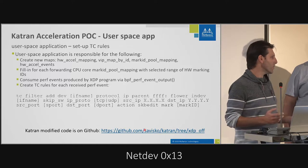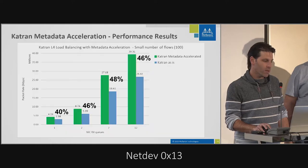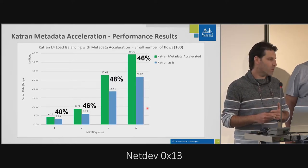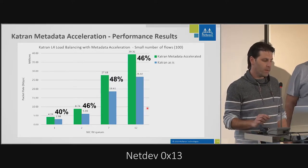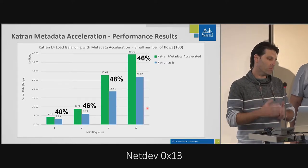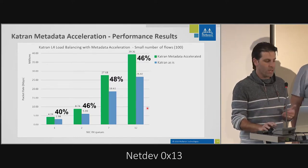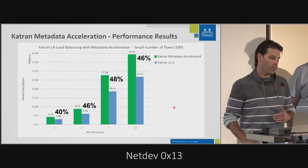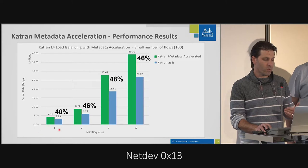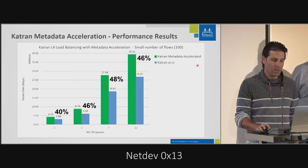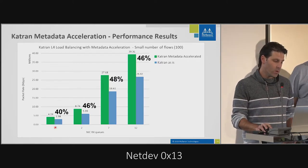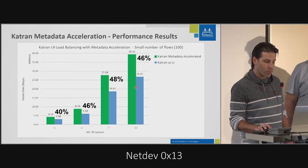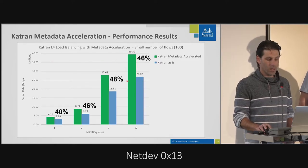For performance results, we ran it with multiple RxQs, each on a different core. With a small number of flows, we saw between 40% and 50% improvement, and it scales as you add cores. The green line shows metadata-accelerated results in packets per second. Single core improved from about 3 million to 4.2 million, going up to an improvement from 26 to 39-40 million packets per second on 12 cores.